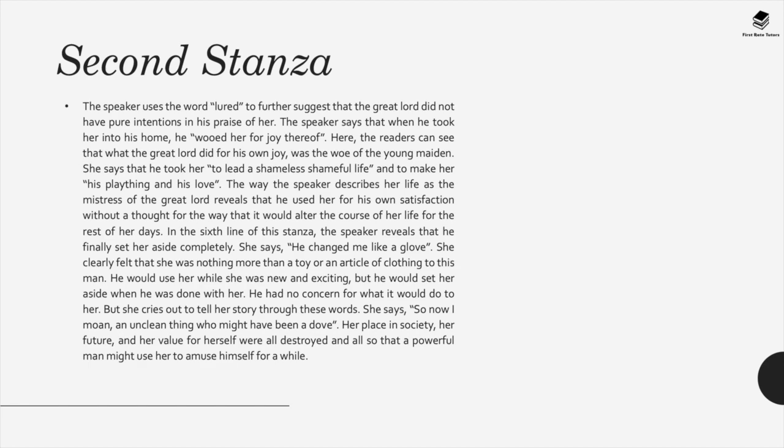The great lord took the speaker as a mistress 'for joy thereof' — for his own pleasure at her expense. She says he took her to 'lead a shameless, shameful life' and to make her his plaything and his love. He used her for his own sexual satisfaction without thought for how this would alter the rest of her life. She says 'he changed me like a glove' — a simile showing she felt like nothing more than a toy, used while new and exciting then set aside.